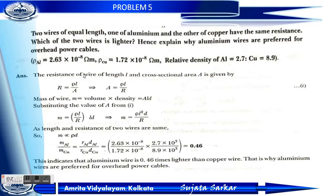This indicates that the aluminium wire is about 0.46 times lighter than the copper wire. That is why aluminium wires are preferred for overhead power cables.